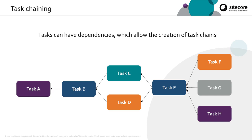Likewise, task E can't run until A, B, C, and D have all been completed. We can also see that C and D both depend on the same task, so they can run in parallel.